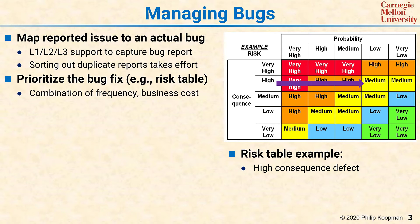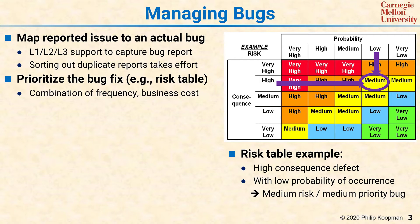You rank the consequence from very high to very low, and what those bins mean should be consistent but depends on your product. Very high might mean a catastrophic system failure, and very low might be a very minor annoyance. Then you take the probabilities and also bin them in a similar way — very high might be it happens every day to every user, very low might be it happens once a year to one user. Looking at the consequence and the probability, you can look at the intersection and figure out the severity. Notice that this risk table is asymmetric — it has weighted consequence more highly than probability, so a very severe bug is going to get either a high or very high risk rating regardless of how often it happens.